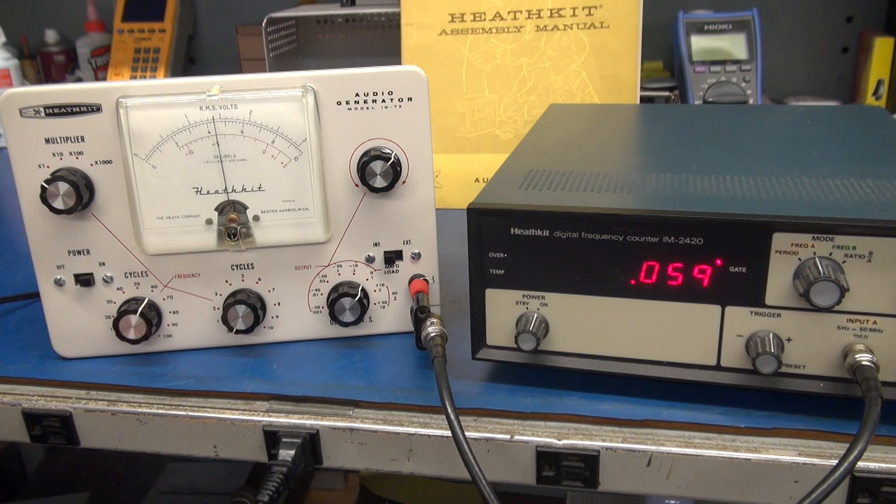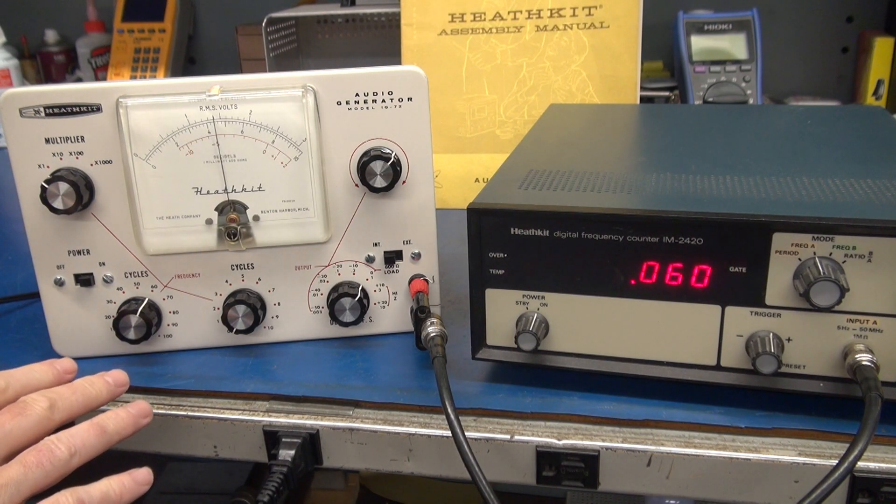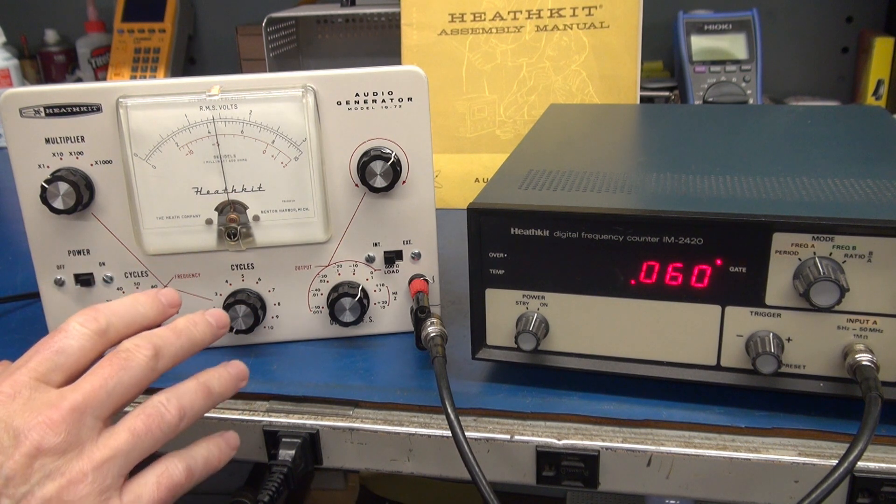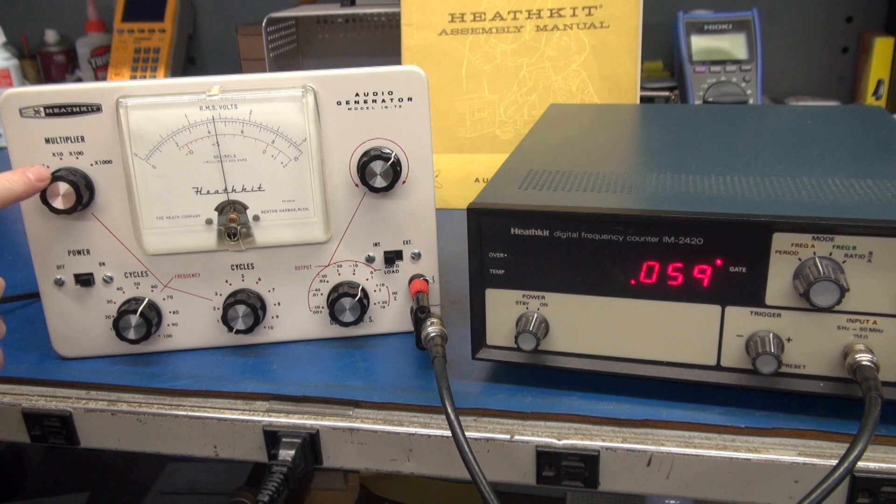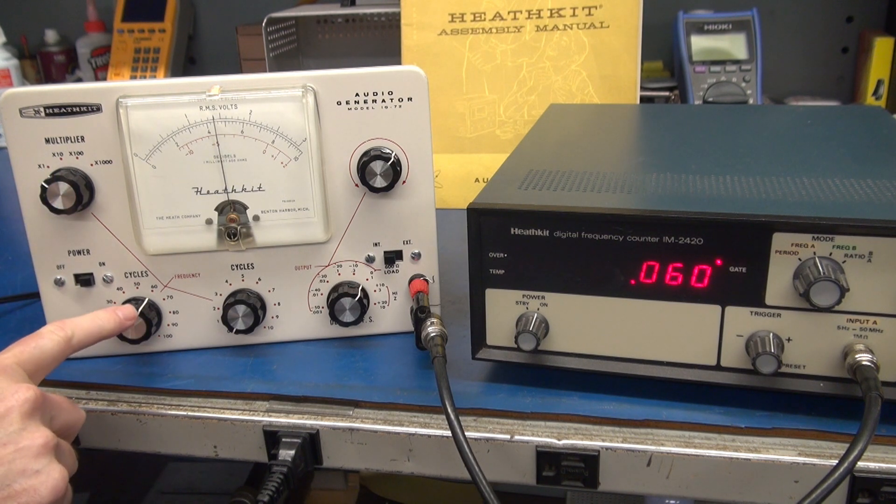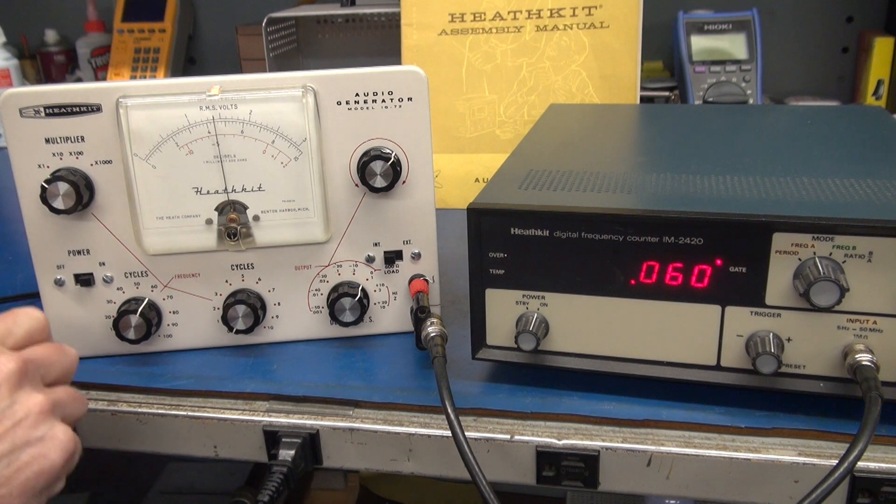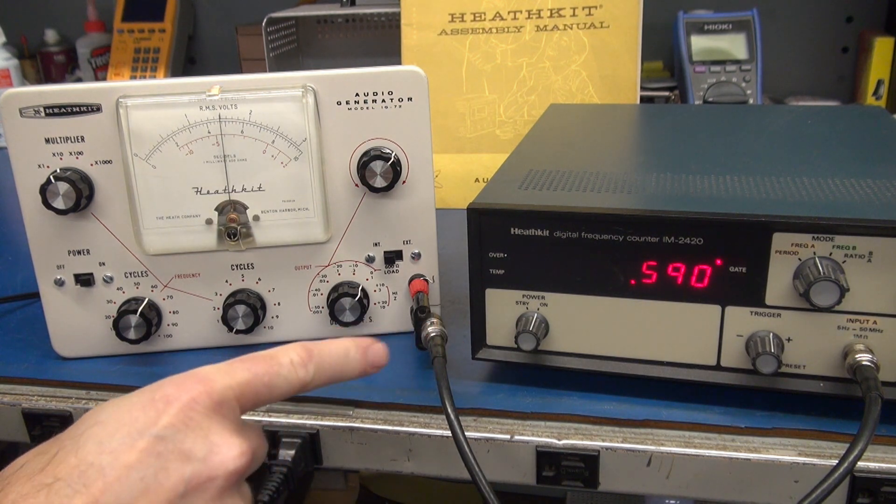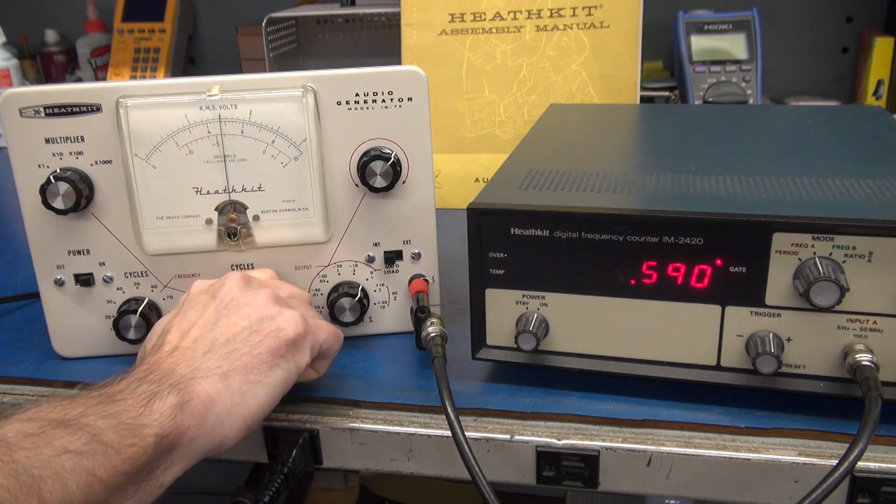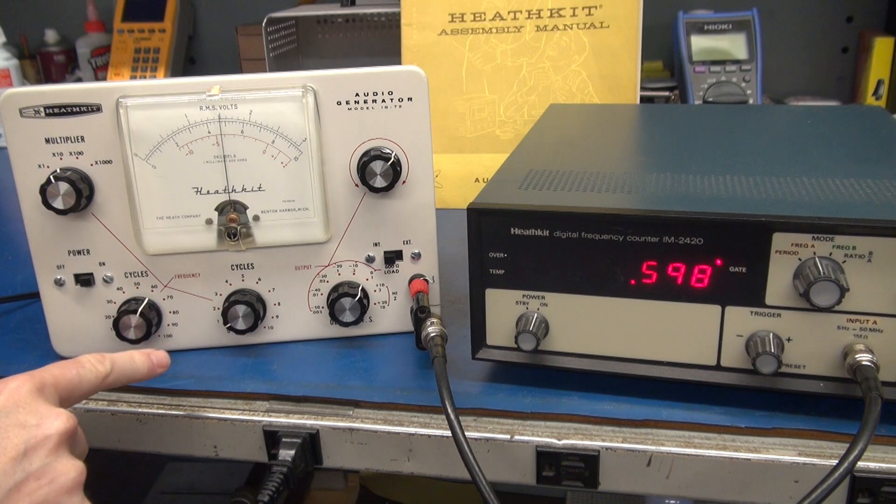So here's a quick example of how the switching works on this audio generator versus a variable capacitor like you'd see on a normal generator. I'm at multiplier one, cycles is 60. You can see we have 60 on the counter. Now I'm going to take my multiplier, go times 10. You see we're just under 600 hertz. And you can make that up with the cycle switch.